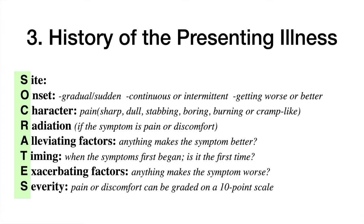O stands for Onset: ask whether the symptom is gradual or sudden, continuous or intermittent, and whether it is getting worse or better. C is for Character — mainly for pain: ask whether it is sharp, dull, stabbing, boring, burning, or cramp-like. R is for Radiation: ask whether the pain travels or moves anywhere else in the body.